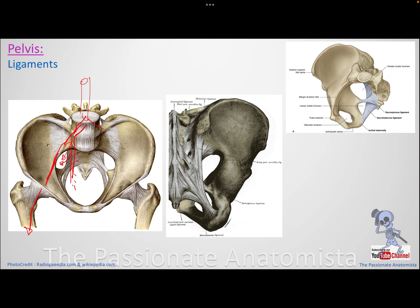The greater sciatic foramen provides an exit route for structures reaching the gluteal region. The lesser sciatic foramen provides an entrance to the perineal region. The pelvis and perineum are separated by the pelvic diaphragm — 'diaphragm' in Latin means separator — and blood vessels and nerves need pathways to reach the perineum.